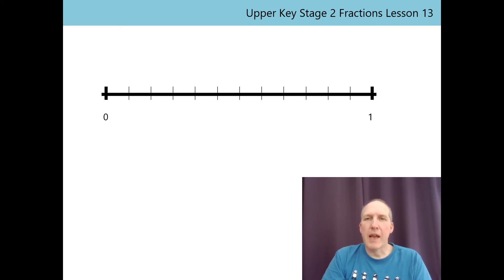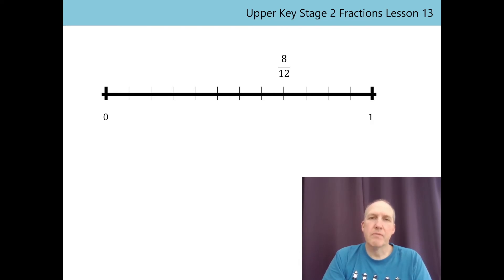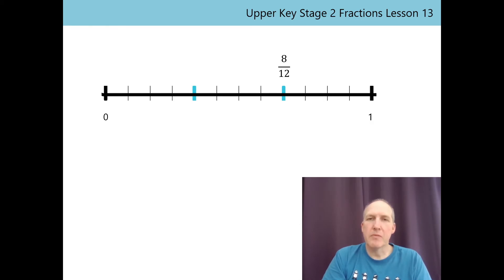Shall we have a look at how this looks on a number line again? The whole is divided into 12 equal parts, so each part is 1/12th. Here's 8/12ths on the number line. Now we said that the highest common factor of 8 and 12 is 4, because 4 is the largest number that is a factor of both 8 and 12. So 4 is the highest common factor. If we mark off every 4th interval, we've divided the whole in a different way. Now the whole is divided into 3 equal parts. Each part is 1/3rd of the whole. 8/12ths lines up with 2/3rds — so 8/12ths simplifies to 2/3rds.